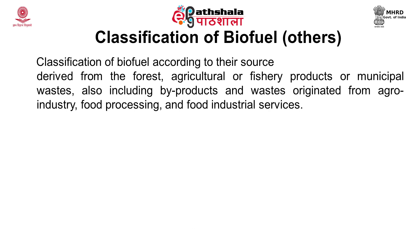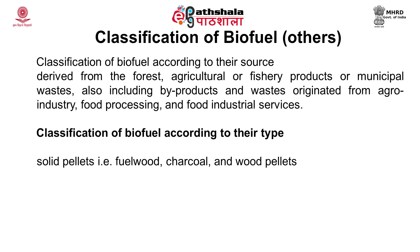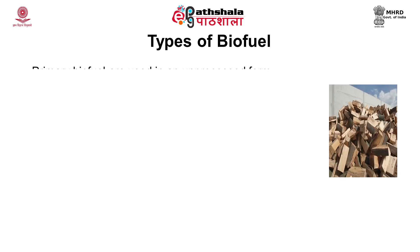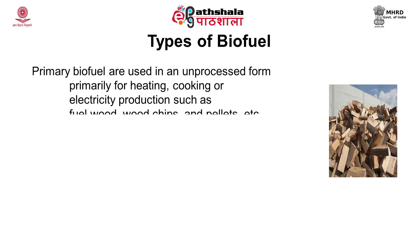Biofuel is also classified based on its physical state. Solid pellets include fuel wood, charcoal, and wood pellets. Liquid fuel includes ethanol, biodiesel, and pyrolysis oil. Gaseous fuel includes biogas. It is also classified based on its use, either in processed or unprocessed form. If used in unprocessed form, it is commonly known as primary biofuel, primarily used for heating, cooking, or electricity production.